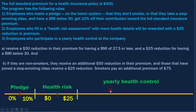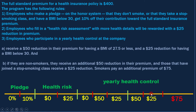Now let's move to the third condition, which has two sub-conditions. If your BMI is less than 27.5, you will get $50. If your BMI is less than 30, you will get $25. And if you don't fall under any of these, you will get $0. As per the second sub-condition, if you are a non-smoker, you will get a $50 reduction. If they join a stop-smoking class, they will get a $25 reduction. But if you are a smoker, then you have to pay an additional $75.